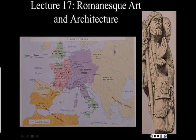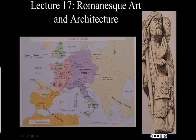The pilgrimage route to Santiago is still traveled today. It's called El Camino, or 'the road,' and people have been traveling it since about the year 1000, even a bit before. This route was heavily traveled, and what we see are churches springing up along the route to accommodate the large numbers of pilgrims.